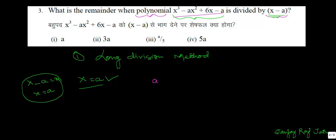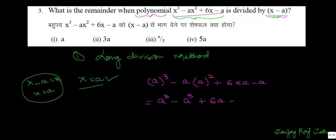Let us put x equal to a. The polynomial becomes a³ − a·a² + 6a − a, which is a³ − a³ + 6a − a. We can simplify by cancelling a³ with a³, and the result is 5a. So the answer is option 4. This is by the factor theorem — if x minus a had been a factor, the remainder would have been 0, so we put x equal to a to find what the remainder is.